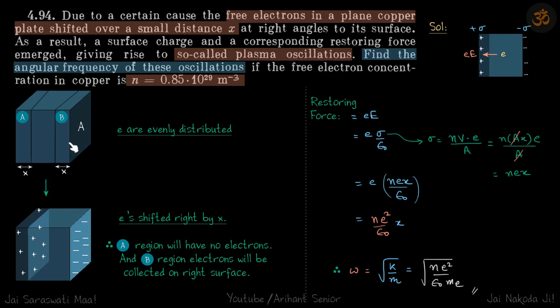Let's say this is our plate and divide it into two volumes at the ends of the plate, of width x. We're doing this because the electrons get shifted by distance x.